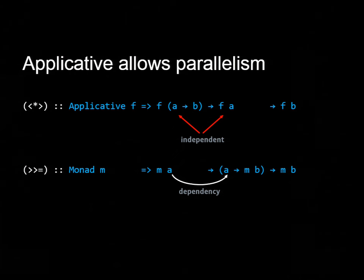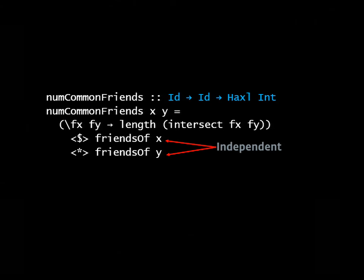In contrast, the monad bind operator, which is how you combine computations in monads, has an explicit dependency between the computation on the left, which returns an A, and this A gets sent into the computation on the right, which is a function from A to MB. So whatever you do, if you're using a monad, you can't exploit parallelism in the bind operator. Back in the original expression here, when we used applicative, the fact that friends of X and friends of Y are independent means that we can use applicative and get parallelism.